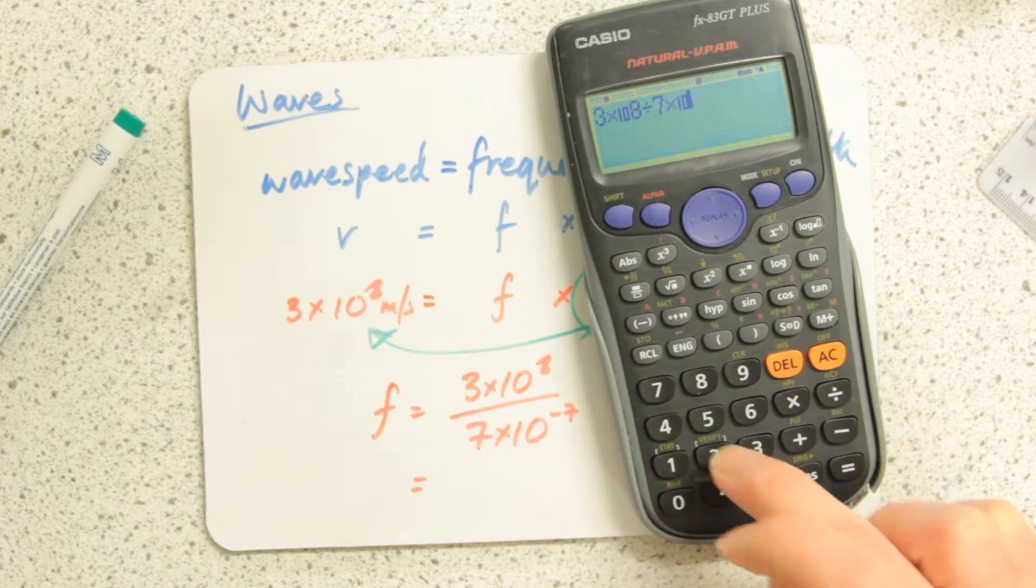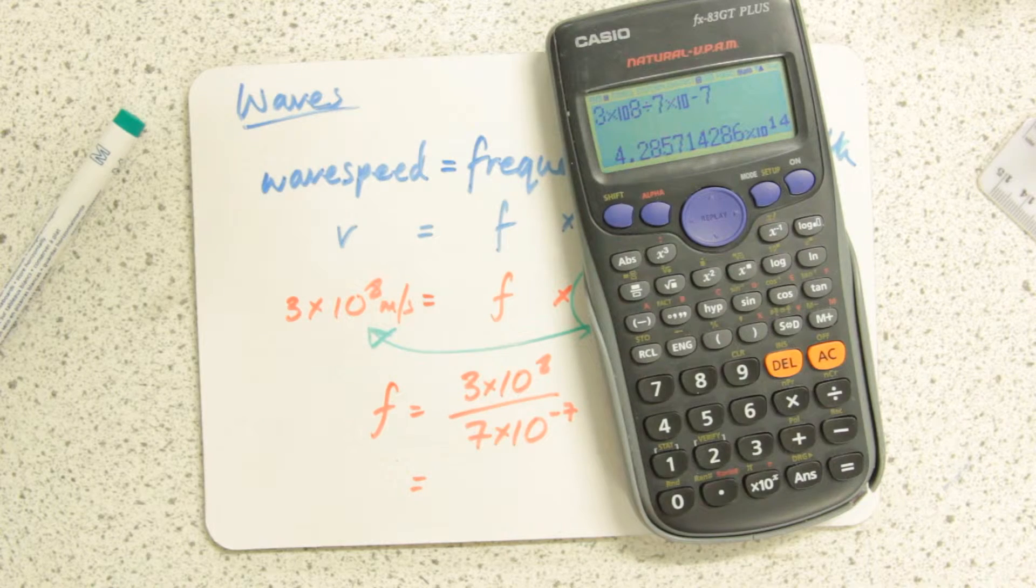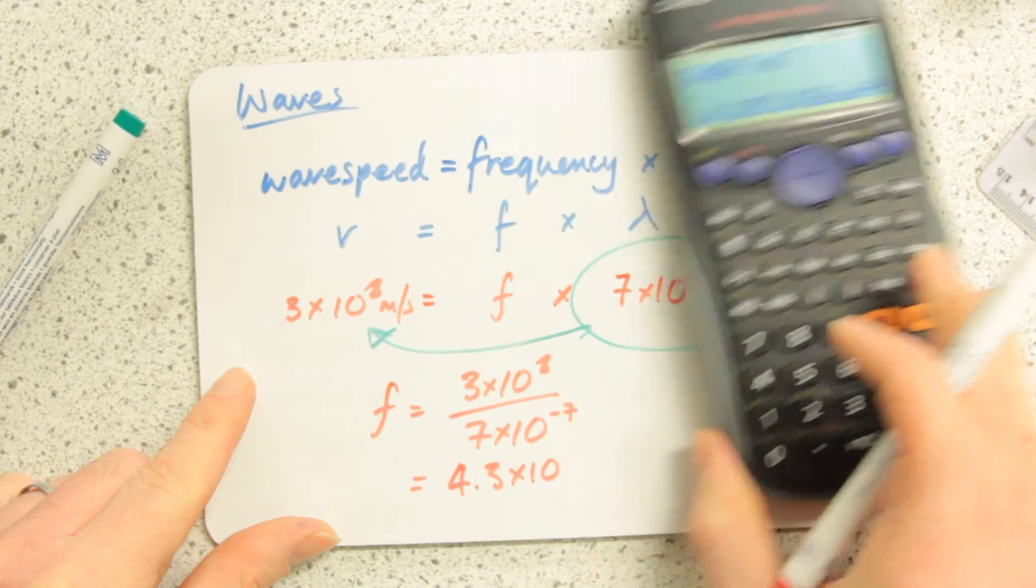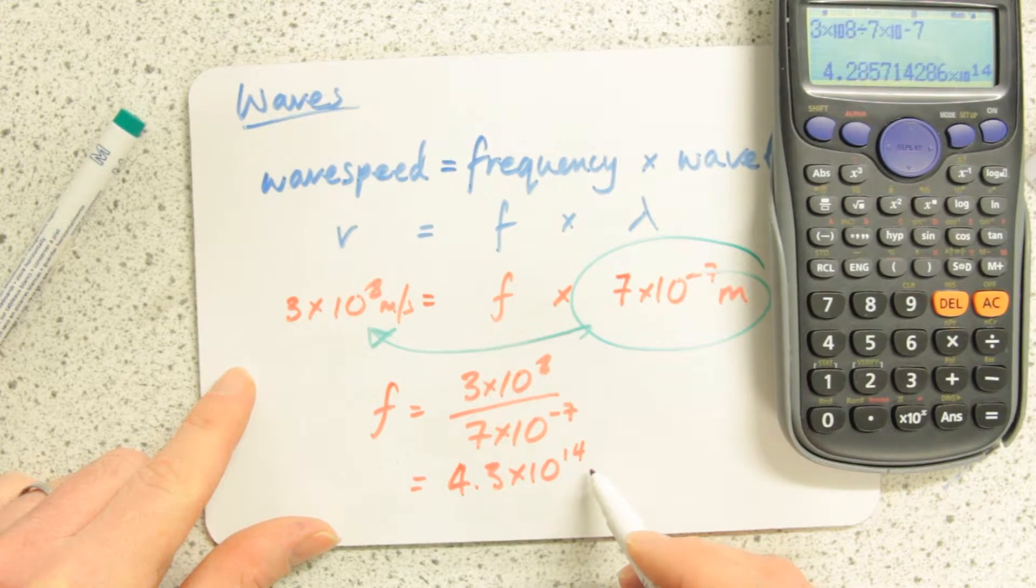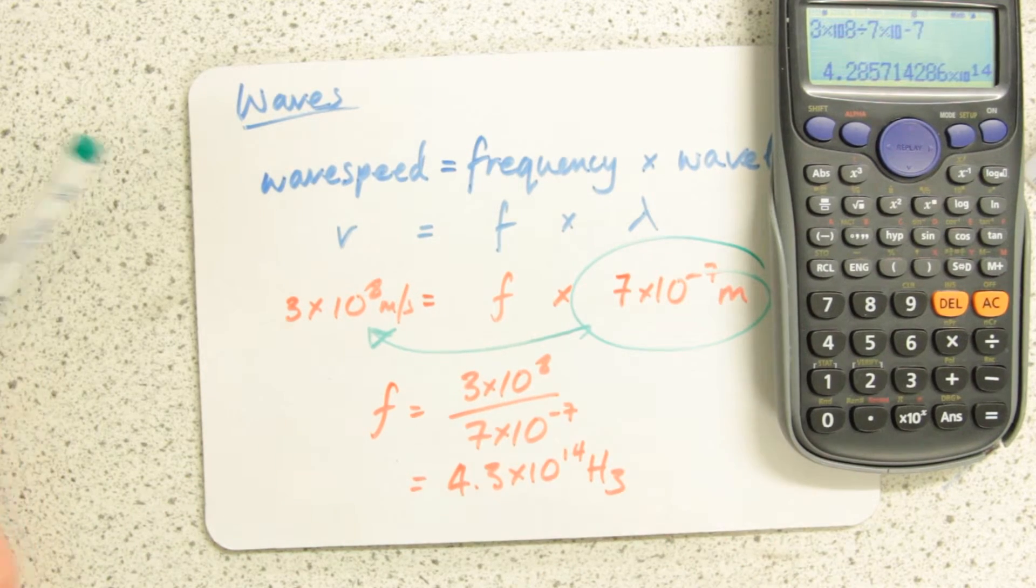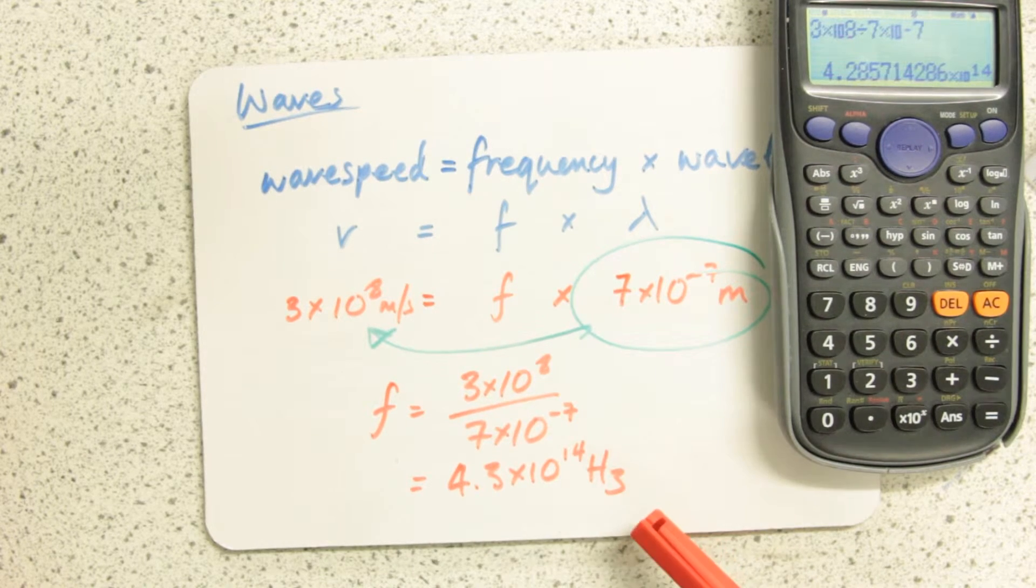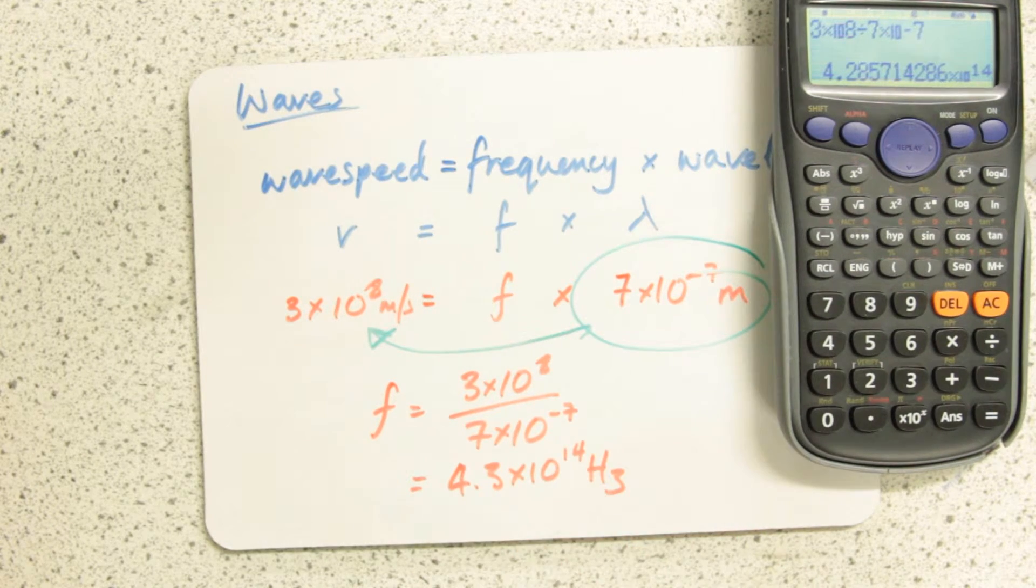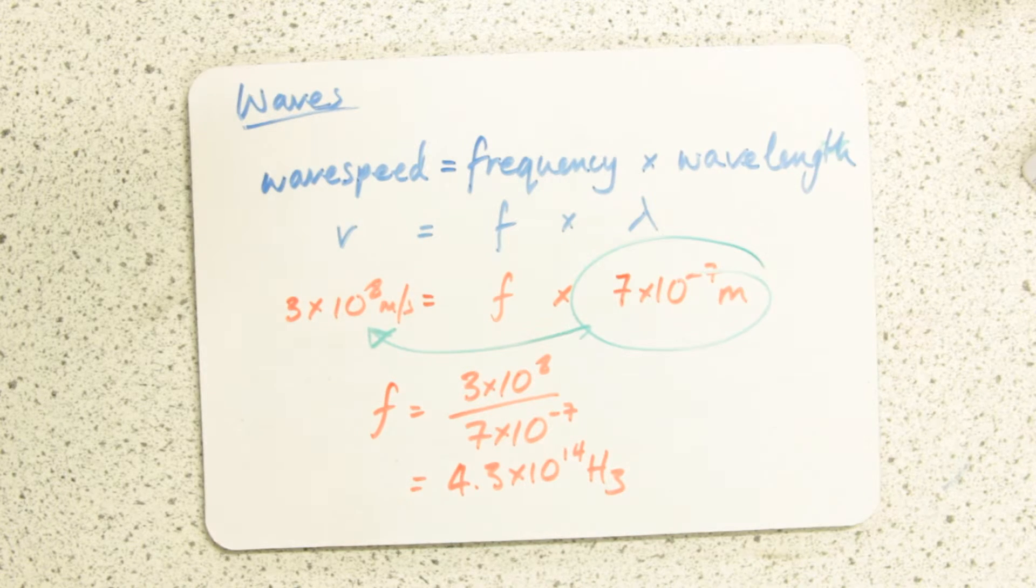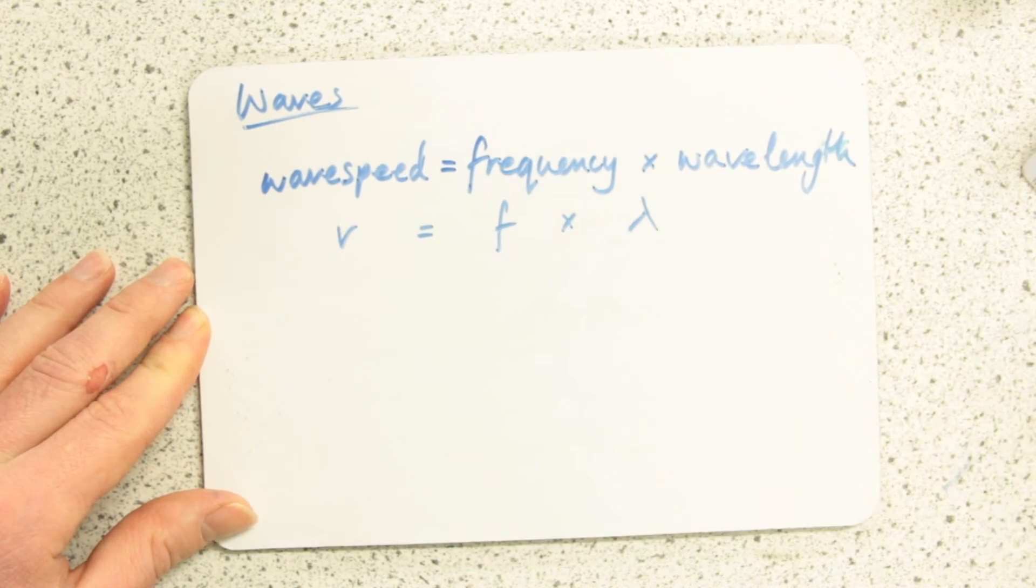Equals 4.3, with a bit of rounding, times 10 to the 14. That's a frequency so it's got the unit hertz: 4.3 times 10 to the 14 hertz. So red light oscillates 4.3 times 10 to the 14 times every single second, which is quite a high frequency.